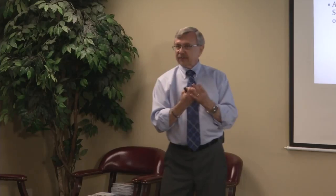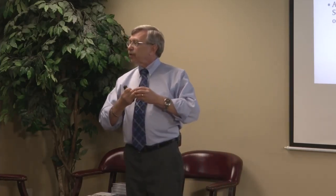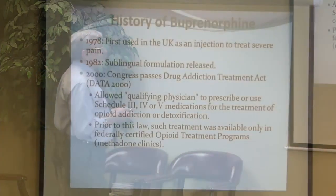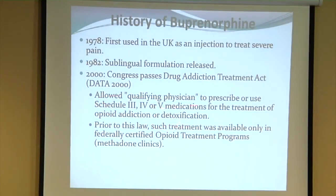Schedule III has medical use but less abuse potential. Buprenorphine is Schedule III; testosterone is also Schedule III. Schedule IV has lower levels — benzodiazepines are Schedule IV. Schedule V includes things like codeine cough syrup; lomotil for diarrhea is a Schedule V opioid controlled substance.